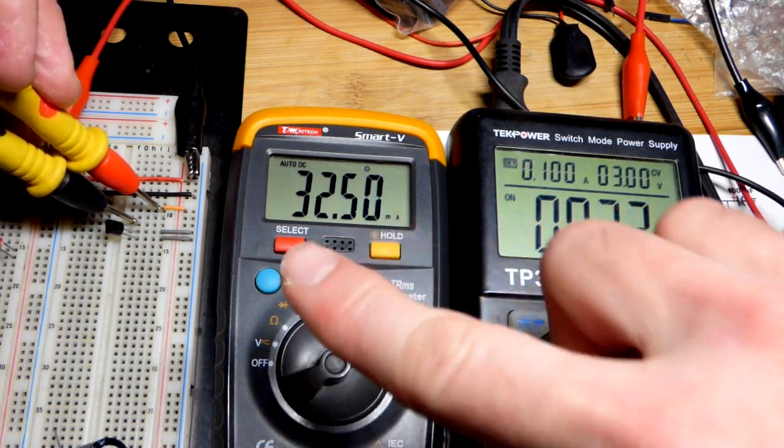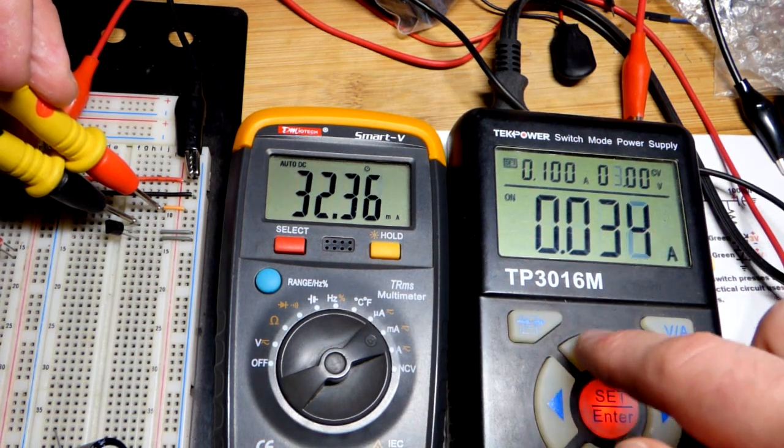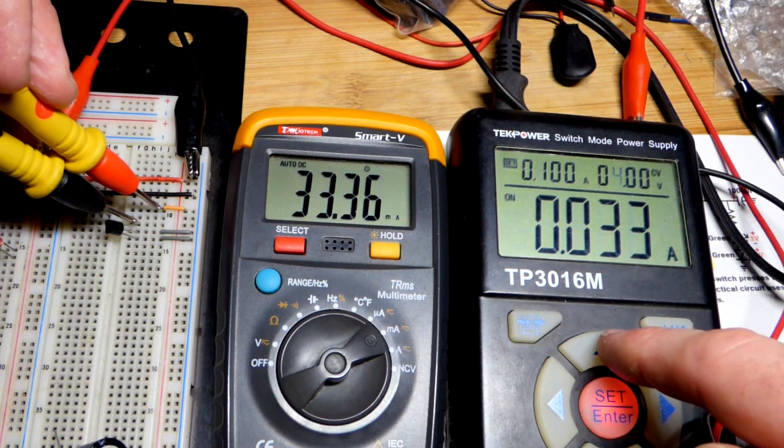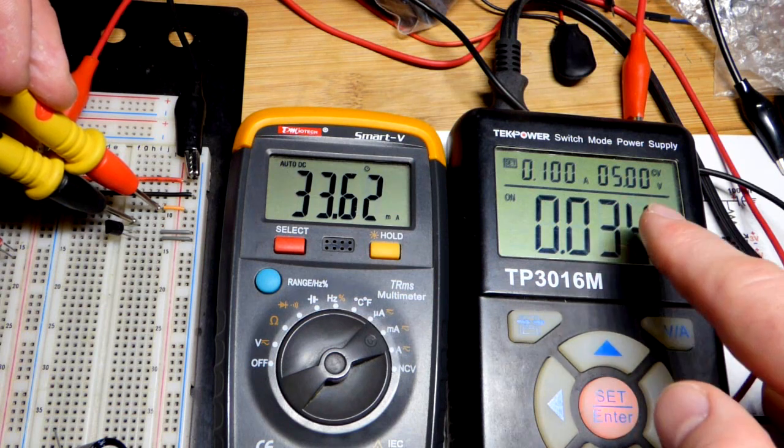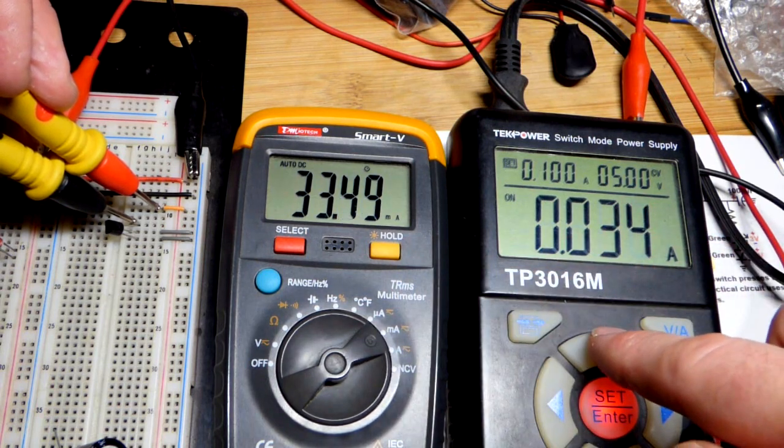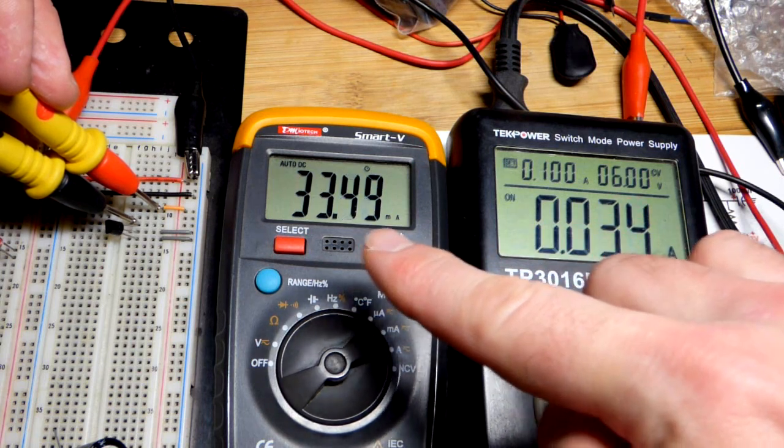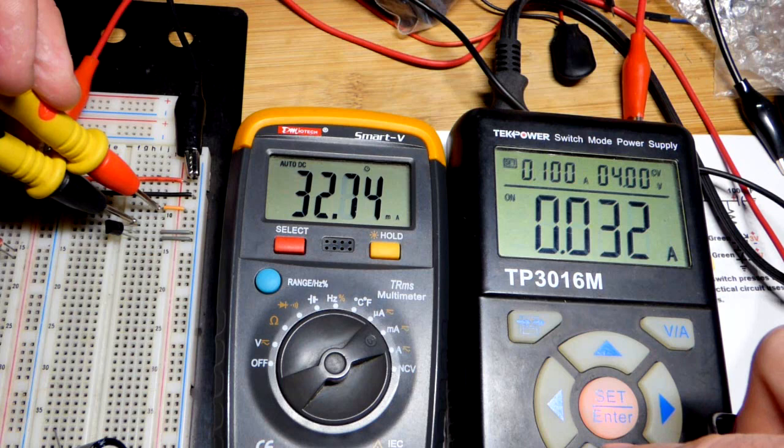So at three volts across the transistor now, we pretty much have it. There you can see 32. If I go up one more volt, now it's 33, a little bit more right there. So probably at least four volts across it to keep the IDSS. At five, it's still holding steady. And as we said before, it's going to get kind of hot with more than five volts. But the main thing is you can see the current held steady there.